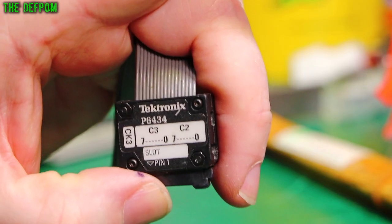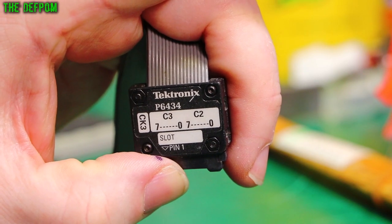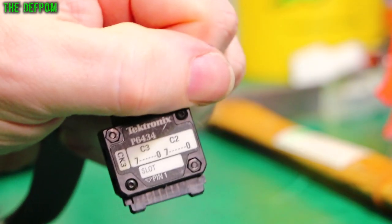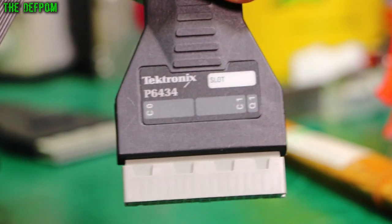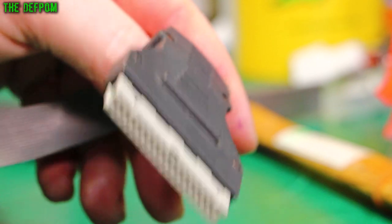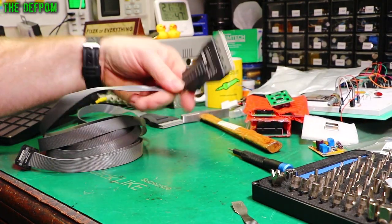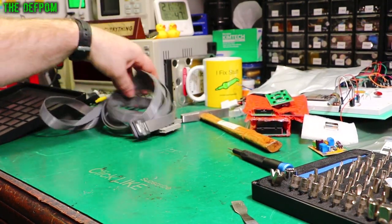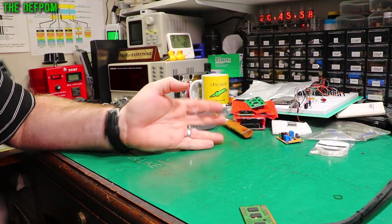So that's the part number for this thing anyway. P6434. In case you want to look up what this thing's actually used for. Maybe for a logic analyzer or something like that. I can't remember exactly. But the main thing I wanted it for was the cables. Having these connectors on the ends here could be handy. I'm not sure yet. But the main thing I wanted it for was the cables. That was interesting wasn't it?